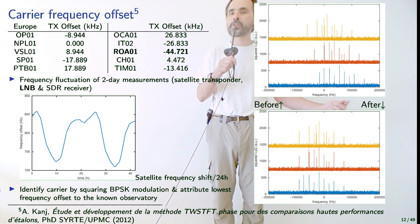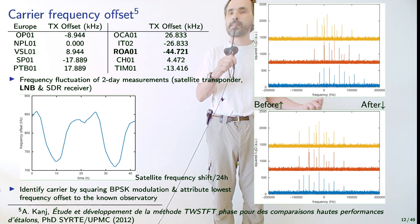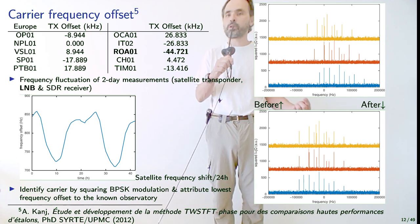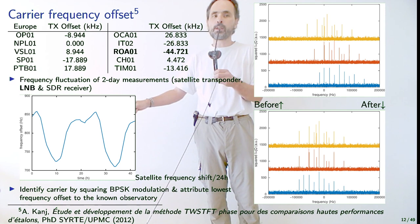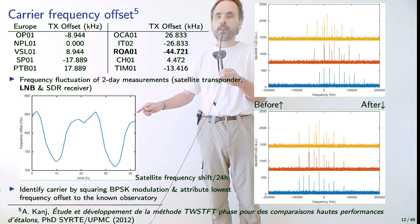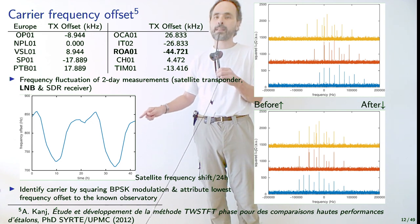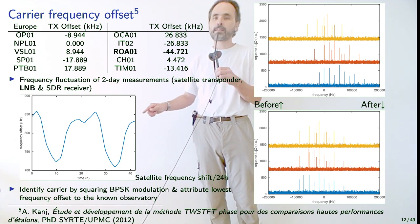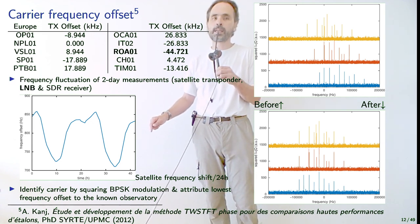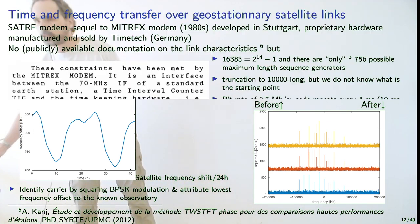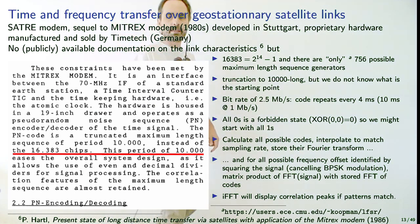Here you see the various carriers received at different times — the frequency shifts over time. On the bottom, we've realigned the spectra by multiplying by a local oscillator to shift the frequency. On the right, over two days, this is the frequency offset of a few hundred hertz introduced by the satellite transponder as it converts the 14 GHz uplink to the 11 GHz downlink. Compensating for this frequency offset is a mandatory requirement before BPSK demodulation.